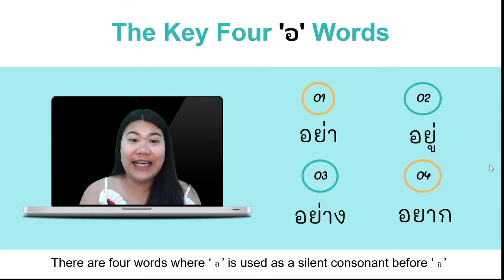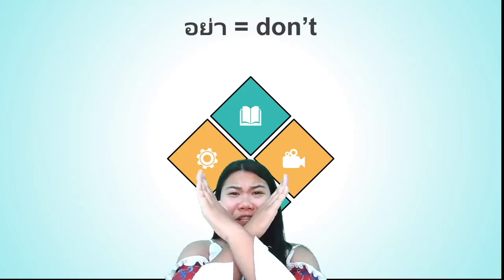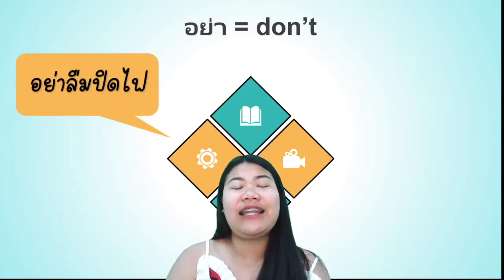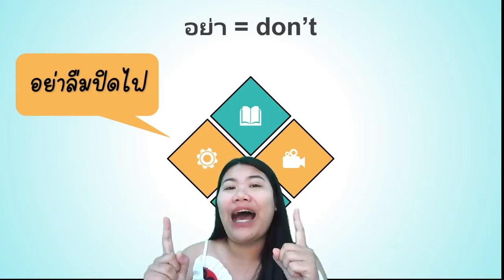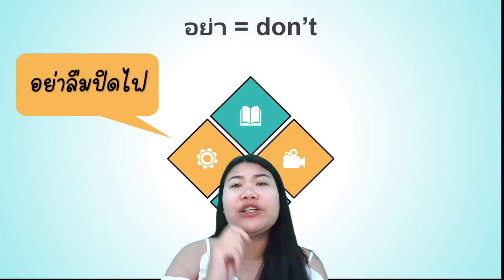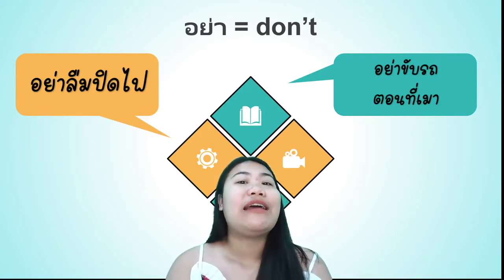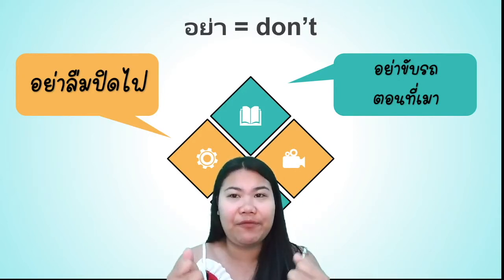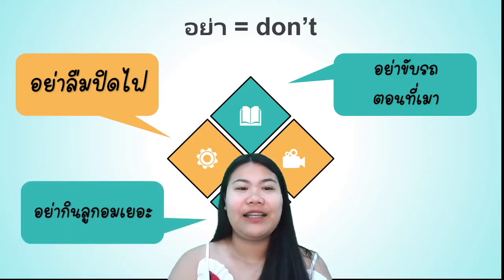Let's see this sentence and how to use อ นำ words. The first one — the word อย่า means 'don't.' The first sentence: อย่าลืมปิดไฟ — don't forget to turn off the light. The word อย่า is always followed by a verb. อย่าขับรถ — don't drive when you are drunk.